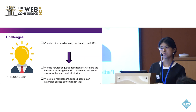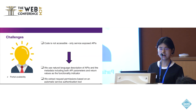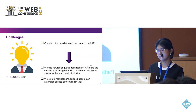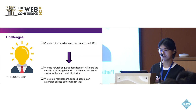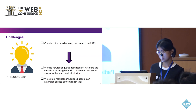The third challenge is that we only have access to exposed APIs and cannot get the source code as in other systems. So we use all the metadata of the API — including its description, parameters, and return values — as functionality indicators. We extract the requested permissions based on automation service authentication tools.